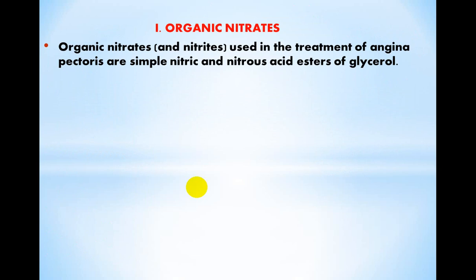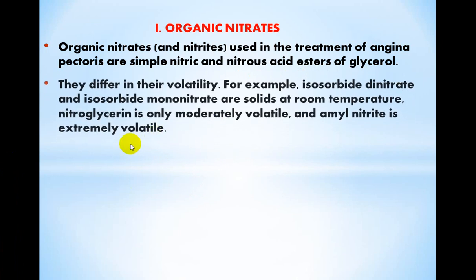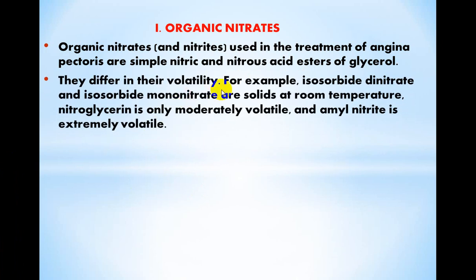Organic nitrates used in the treatment of angina are simple nitric and nitrous acid esters of glycerol. They differ in their volatility. For example, isosorbide dinitrate and isosorbide mononitrate are solid at room temperature. Nitroglycerin is only moderately volatile, and amyl nitrite is extremely volatile.